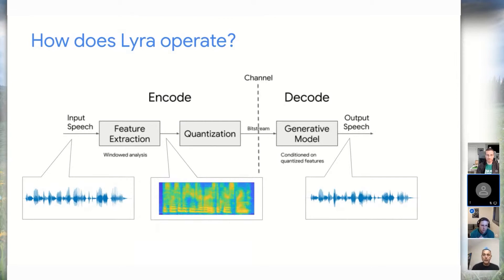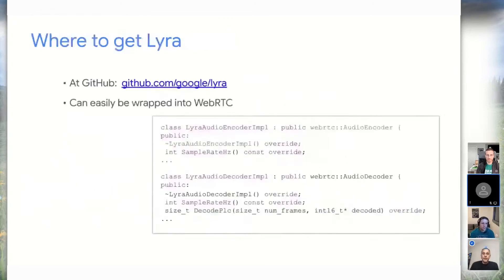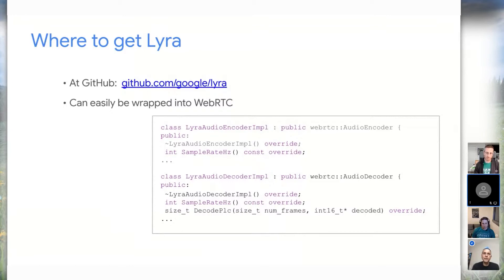We made Lyra open source and put it on GitHub as a library with a regular API. It's very easy to wrap it into WebRTC. The reason we didn't open source our wrappers is that they are heavily tailored for Duo and not very generic, and making generic ones for the world would take extra time — though most people in this community know how to make a wrapper and call Lyra from WebRTC.